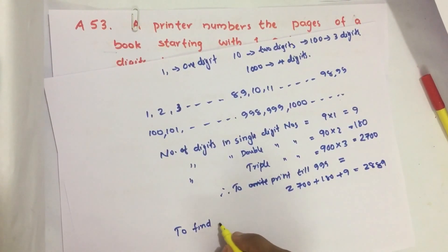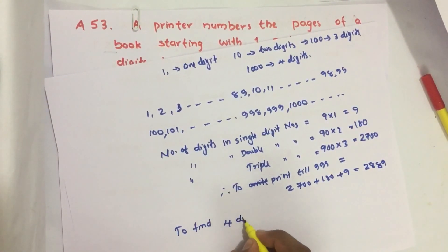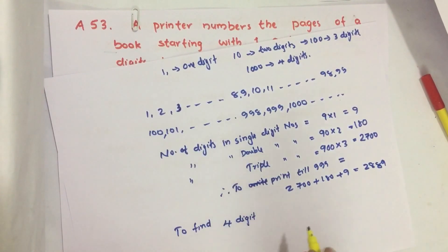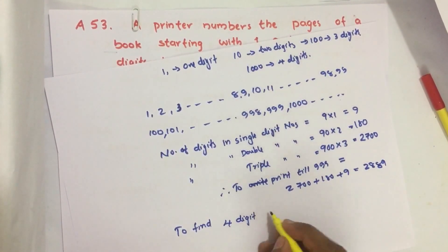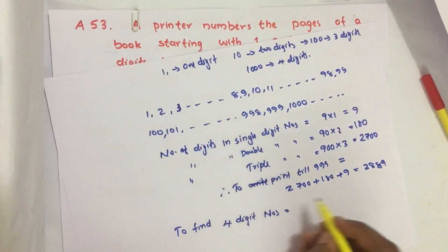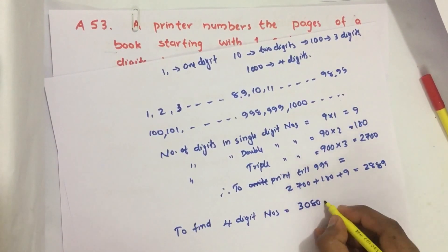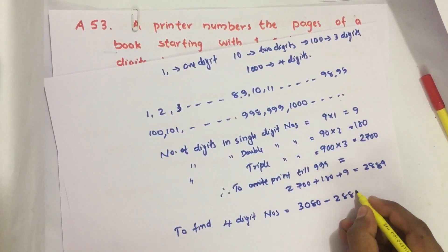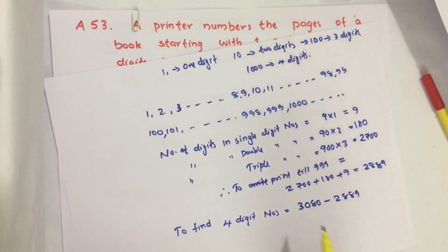Then to find the number of digits in four-digit numbers, the remaining is 3089 minus 2889, which equals 200. These remaining digits are used to print four-digit numbers.